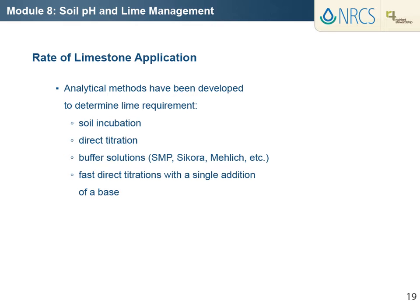In some states, instead of using a buffer pH method, the lime requirement is calibrated from measured soil pH and the soil cation exchange capacity. Cation exchange capacity can be determined by lab measurement or knowledge of the soil's textural class and color, both of which reflect the soil clay and organic matter content. In addition to these methods, some states, especially in the southeast U.S., have developed fast, direct titration methods that use a single addition of a strong base to determine lime requirement.